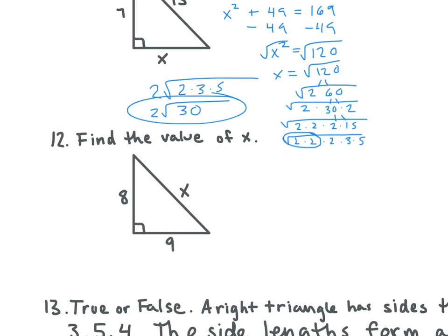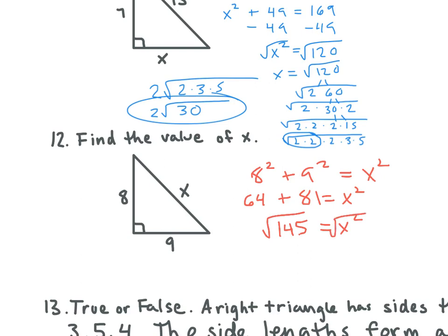Let's look at number 12 — find the value of x. We set up 8 squared plus 9 squared equals x squared. So what's 8 squared? 64. And 9 squared? 81. 64 plus 81 is 145, which equals x squared. Take the square root of both sides. Can we simplify 145? No. So x equals square root of 145.